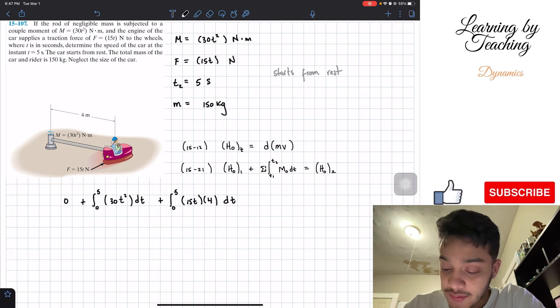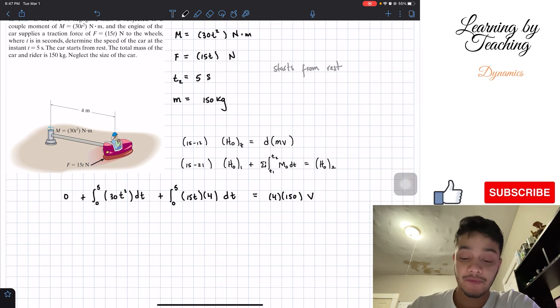I believe those are the only two moments that we have in this problem, this moment and the moment that this force is creating. Therefore, we're done with that part of the angular impulse. We have that this is going to be equal to then the angular momentum after our five seconds. The angular momentum after our five seconds, we're going to utilize this equation dmv. So the distance is four meters, the mass is equal to 150, and the velocity is what we're trying to find. So I'm going to state it as v for velocity.